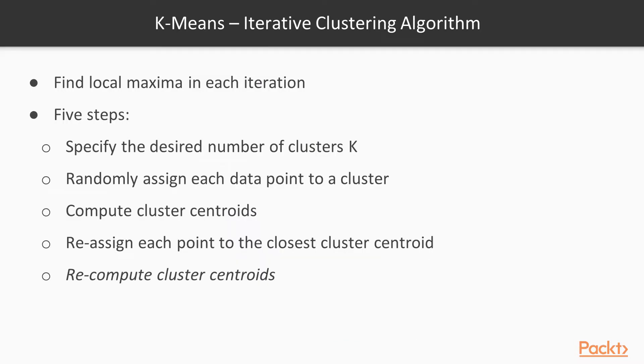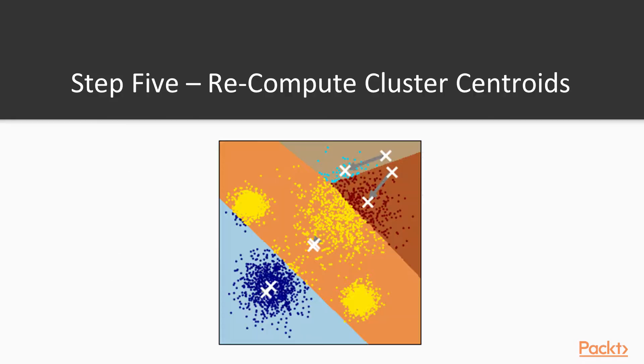Then, since the data points have been reassigned and the clusters have changed, now the cluster centroids have to be recomputed. We can see that on the figure with the gray arrows, indicating that the cluster centroids have shifted.